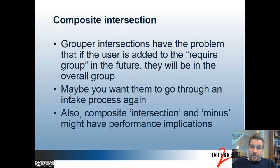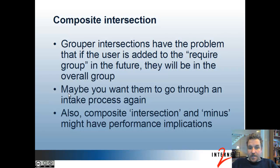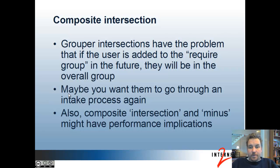The rule we're going to use as an example is composite intersection. Grouper intersections have the problem that if a user is added back to a required group in the future after being removed — for instance, if they were no longer an employee but then become an employee in another department — they'll be in the overall group again, but maybe you want them to go through an intake process to get those authorizations again.